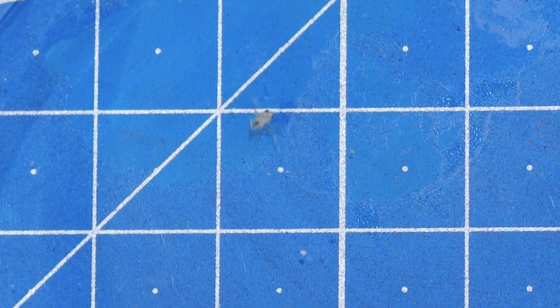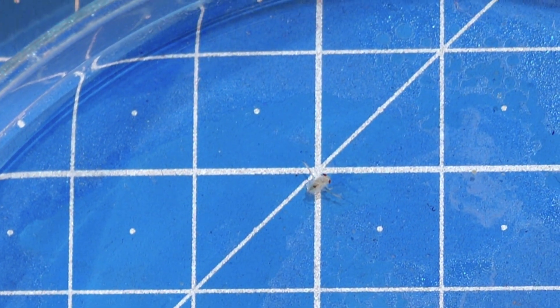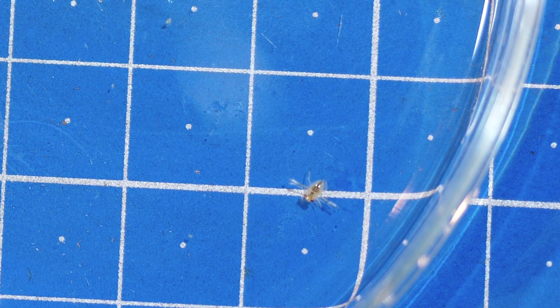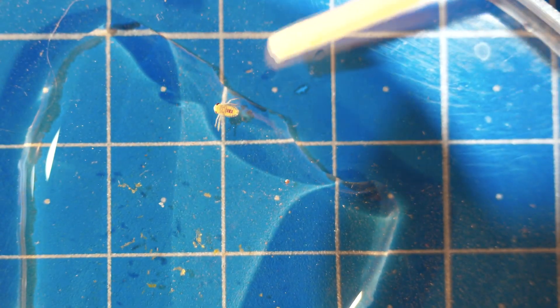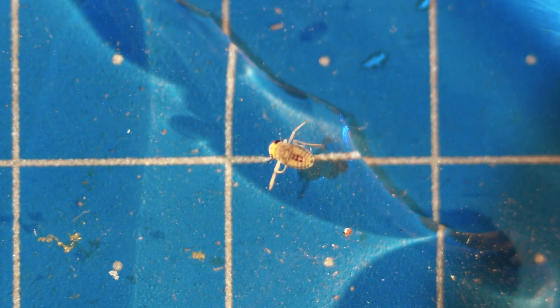After searching the internet, we are able to identify this kind of creatures. This is a type of water bug called a water boatman. The size of the largest ones is about a sixteenth of an inch. These creatures are very young. It will be very interesting to see how the bugs grow during the experiment.